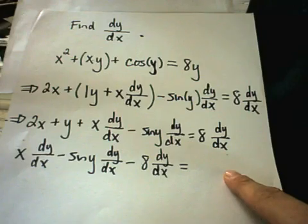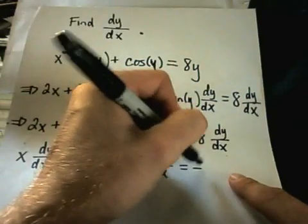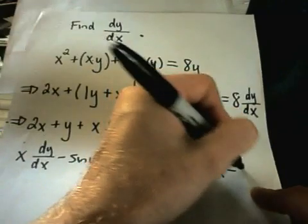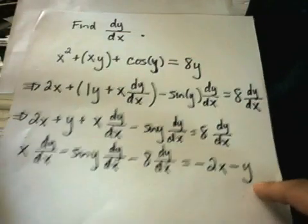And now the two terms on the left, the 2x and the y, that didn't have a dy dx, I'm going to subtract those over. So, minus 2x will bring the 2x over, and minus y will bring the y over.